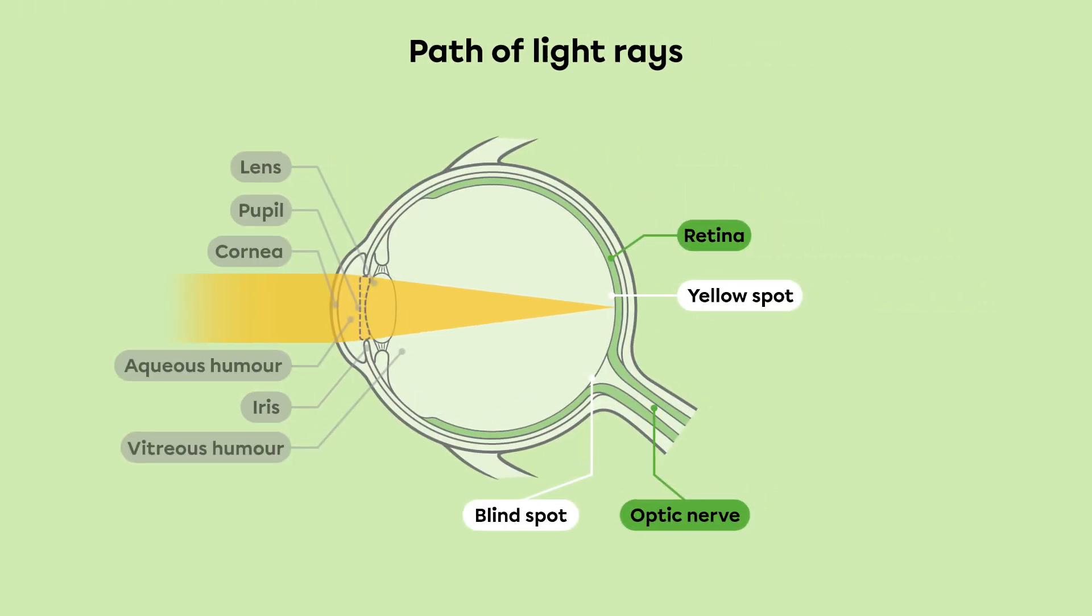Once the retina has transformed the light rays into nerve impulses, these impulses are transmitted to the visual region of the brain by the optic nerve. The nervous system interprets the information and creates an image.